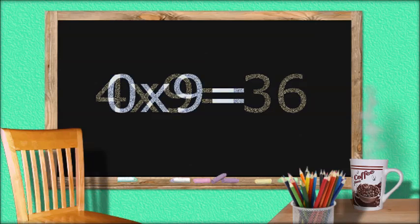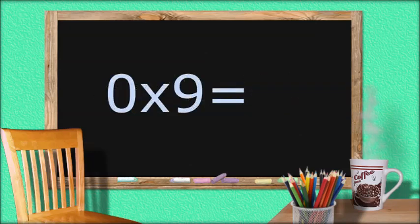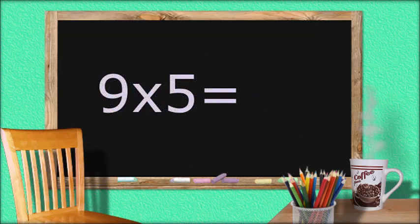0 times 9 equals... 0. 9 times 5 equals... 45.